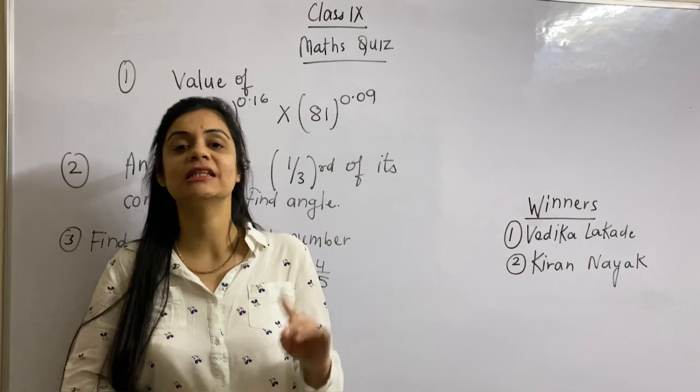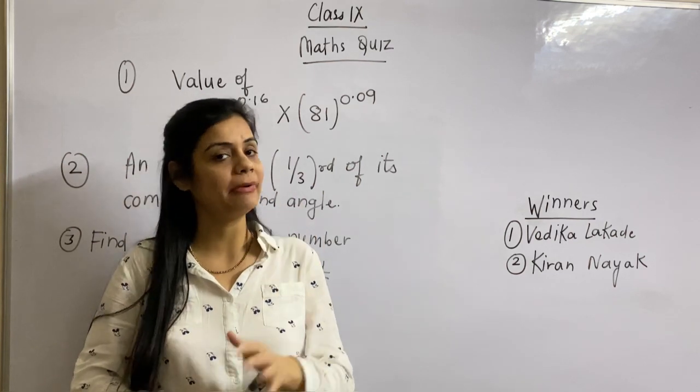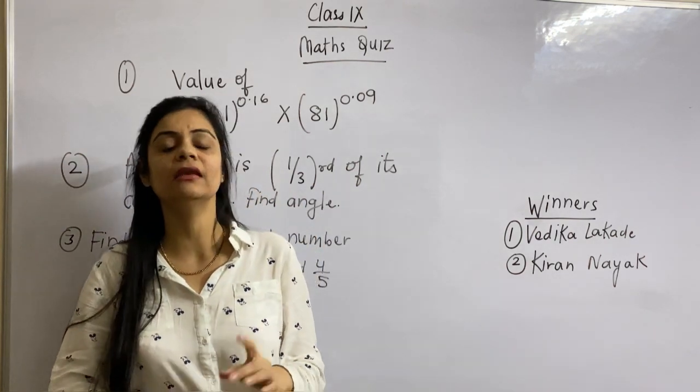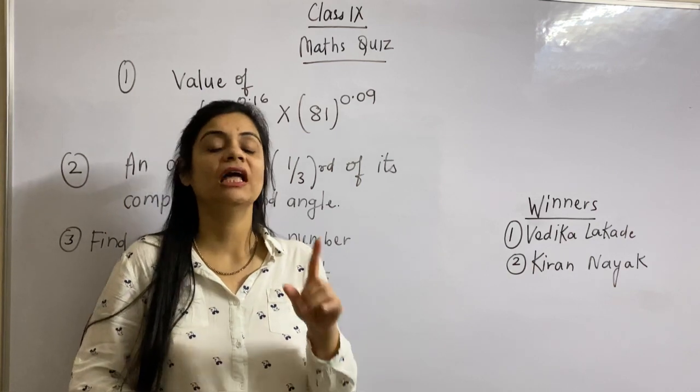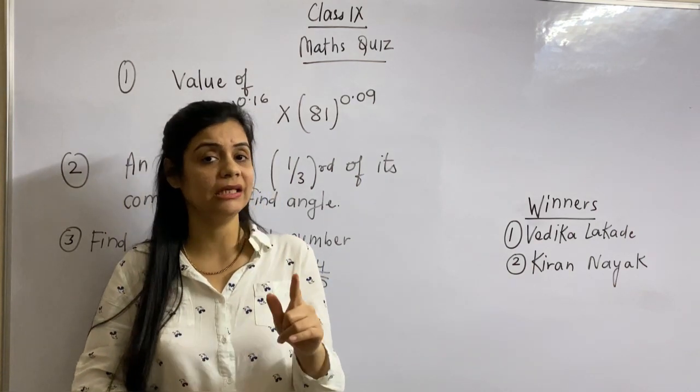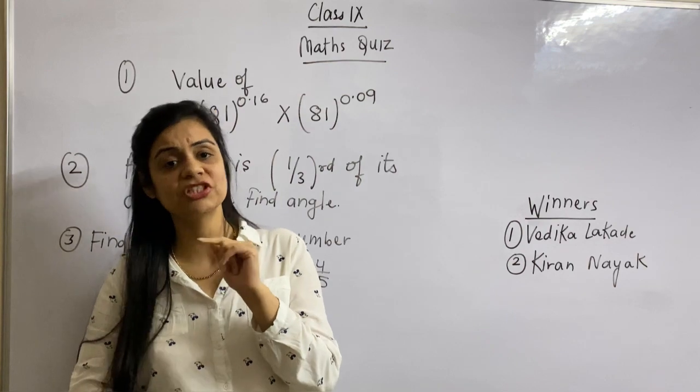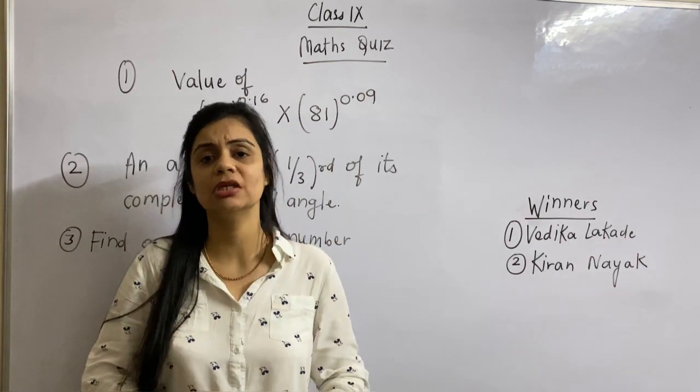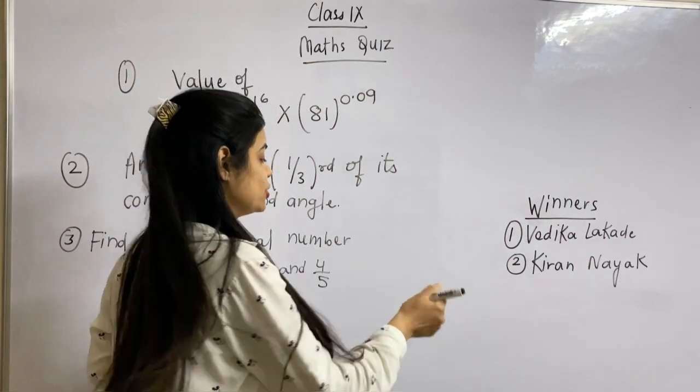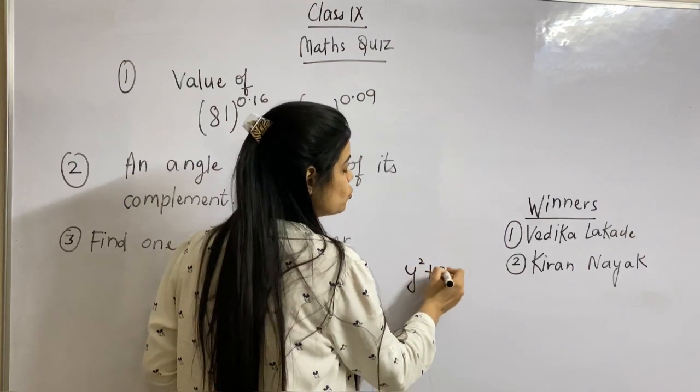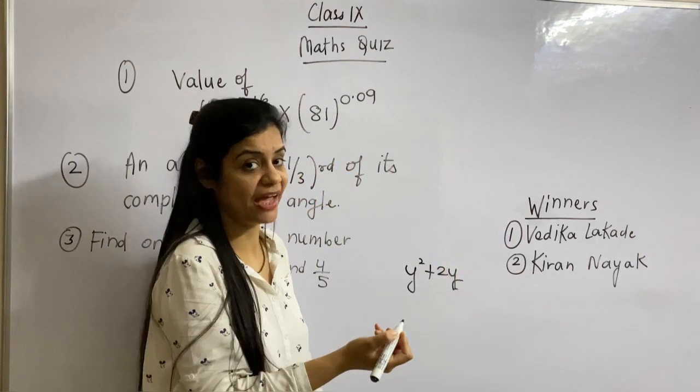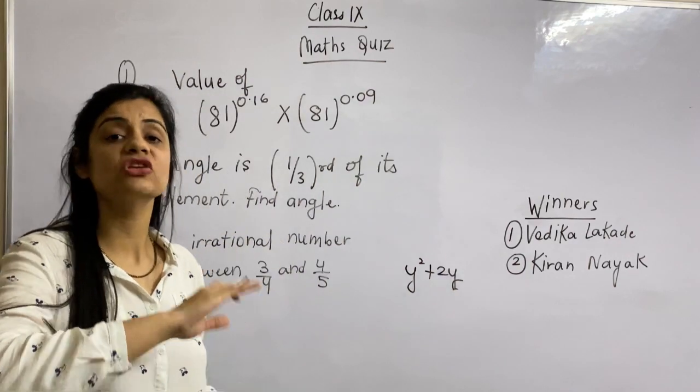The second question was given and the answer was provided to you. In the second question, your first and third answers are wrong. The question was y square plus 2y equals 0. Find the zeros of this polynomial.